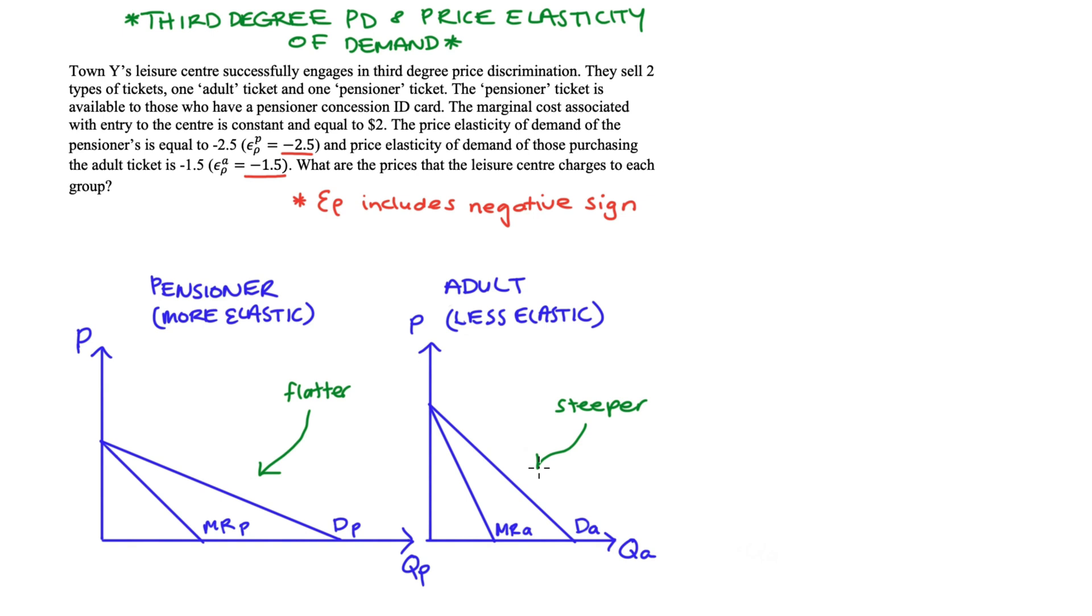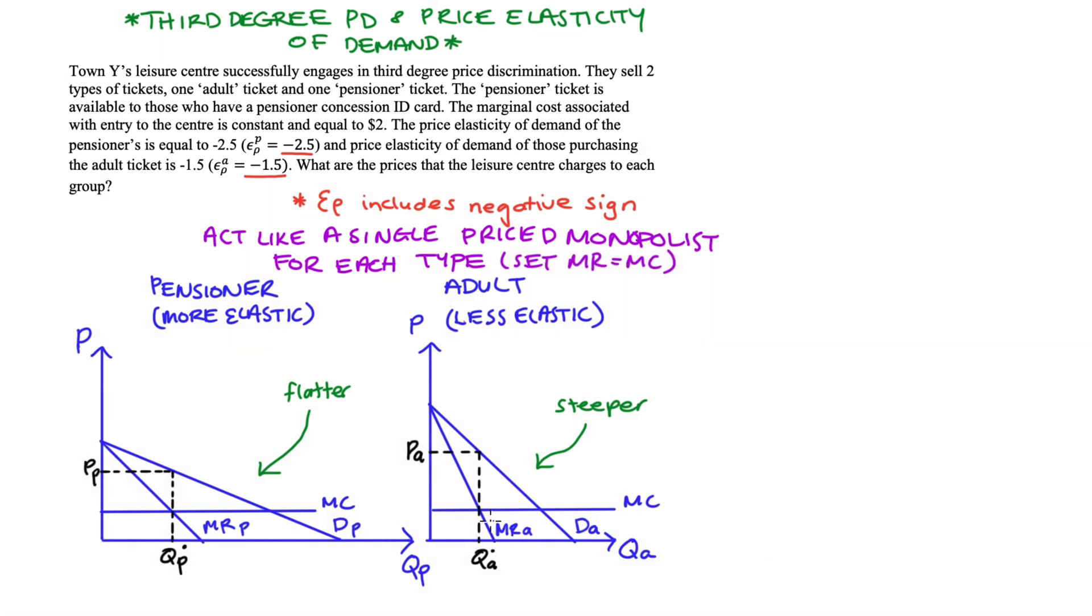Now our firm, when they engage in third degree price discrimination, will essentially just act like a single price monopolist in each of these sub markets. So if I put in a marginal cost curve, which in this case will just be a straight line, it'll be flat because it's constant for each type of consumer, they will produce such that marginal revenue is equal to marginal cost, just like we have in the diagram here, and then read the price off demand.